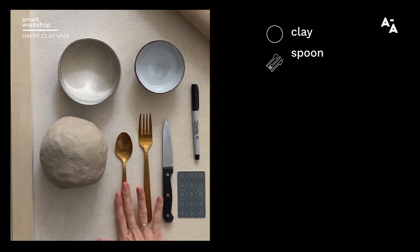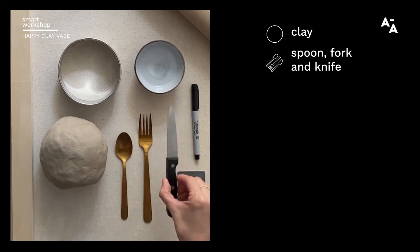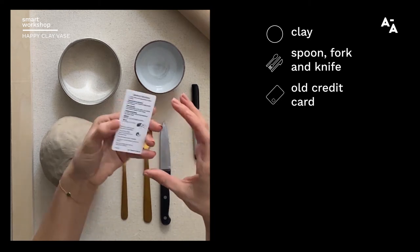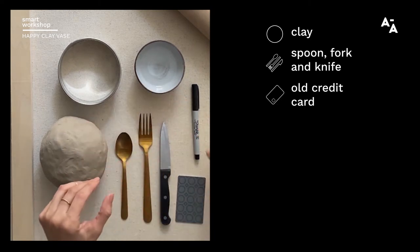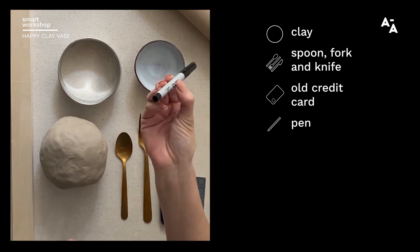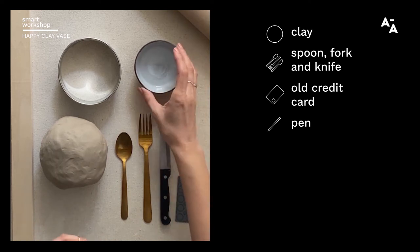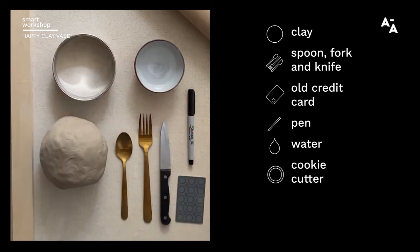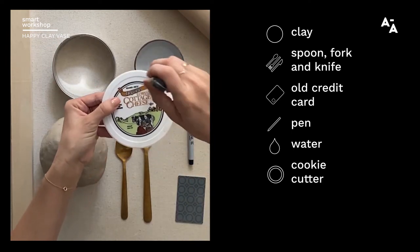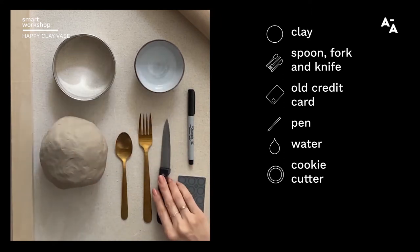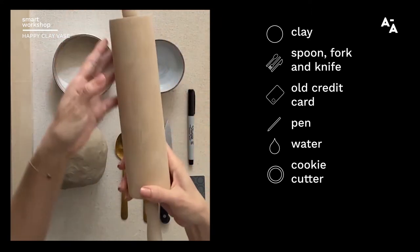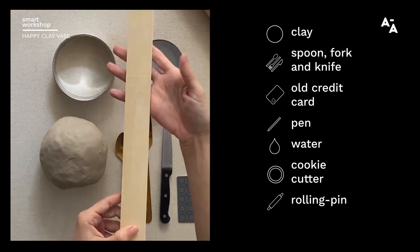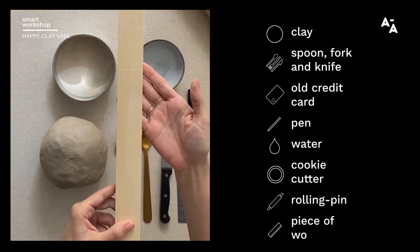You also need a spoon, a fork, a kitchen knife like a steak knife, an old hotel room key or credit card, a pen with a nice round bottom, a little bit of water, a round cookie cutter or a lid that's round that you can cut around with your knife, a typical rolling pin, and something with a nice straight edge. I'm using a piece of wood, but you can use a ruler.